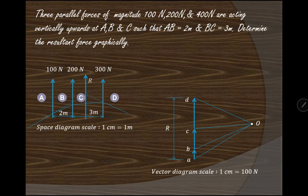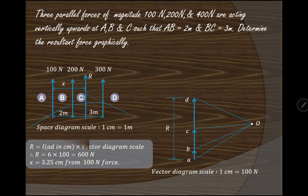The resultant R passes through that intersection point. In magnitude, R is given by the distance from A to D, which is 6 centimeters, multiplied by the vector diagram scale of 100 Newton, giving R = 6 × 100 = 600 Newton. The distance x from the 100 Newton force measures 3.25 centimeters. In this way we can find the magnitude, direction, and position of the resultant of like parallel forces using the space diagram, vector diagram, and funicular polygon. Thank you for watching — do subscribe to our channel.